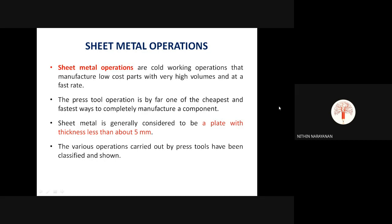Sheet metal operations are cold working operations that manufacture low cost parts with very high volume at a fast rate. Press tool operation is by far one of the cheapest and fastest ways to completely manufacture a component. Sheet metal operations can be either cold working or hot working operations. We already know extrusion, forging, and rolling as hot working processes. Sheet metal operations are cold working operations, used at normal temperature.